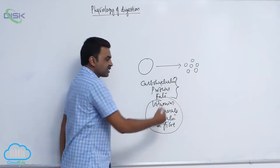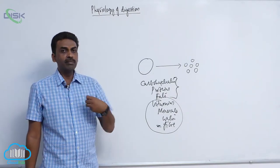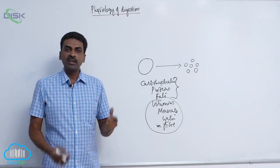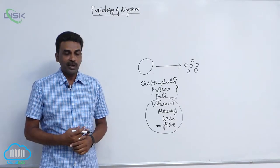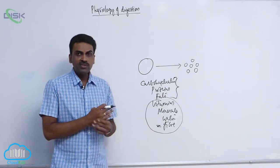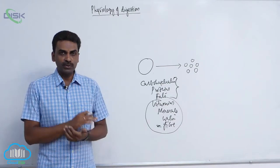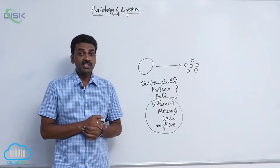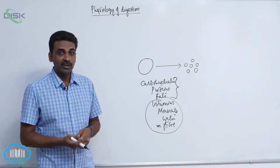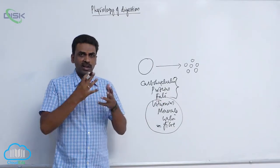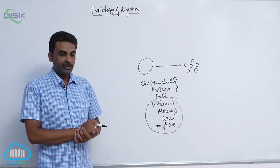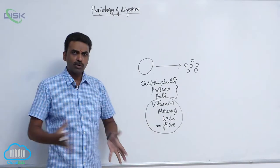The first three — carbohydrates, proteins, and fats — are in complex form when you take them. Water, minerals, and vitamins are already in simpler form and are absorbed as such. Certain vitamins undergo diffusion, and certain vitamins are synthesized by bacteria present in the colon. Gut flora synthesize certain vitamins, which are absorbed in the large intestine. Minerals and water are absorbed by simple diffusion directly into the blood.